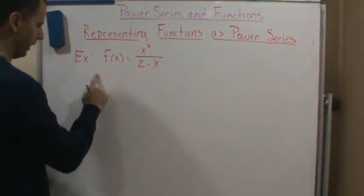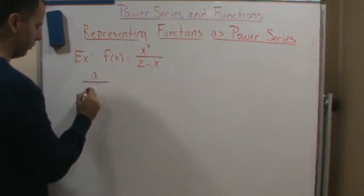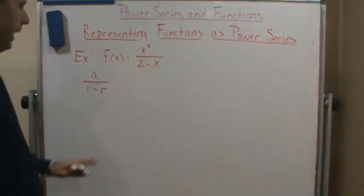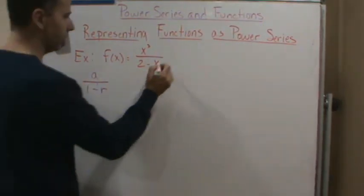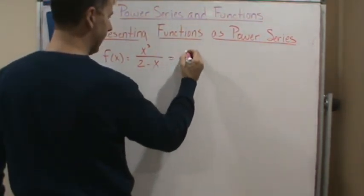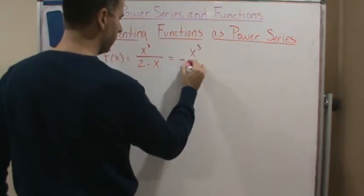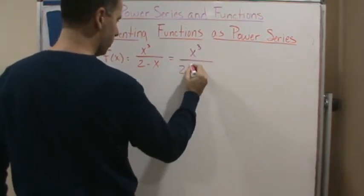Okay, so let's do that. So again, first I'm going to factor out a 2, right? We need a 1 here, so I'm going to write this as x cubed over 2 times 1 minus x over 2.